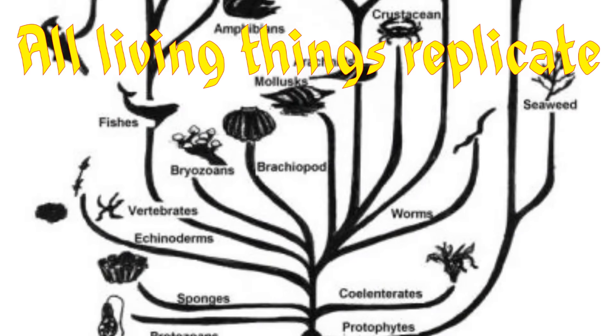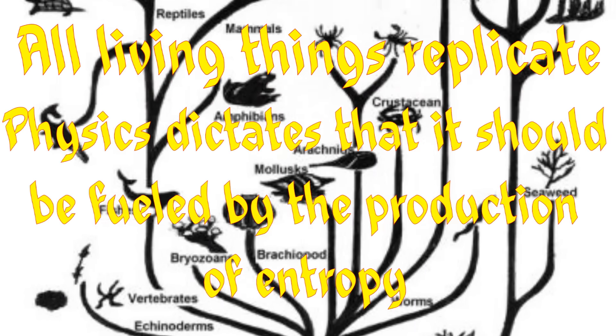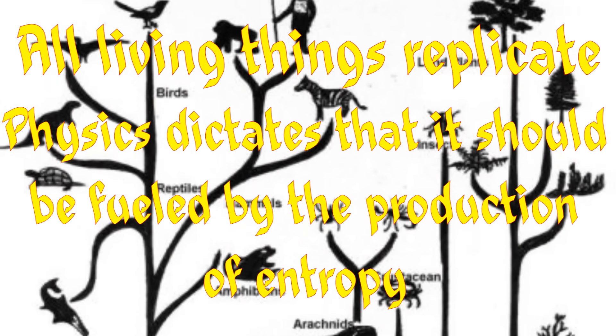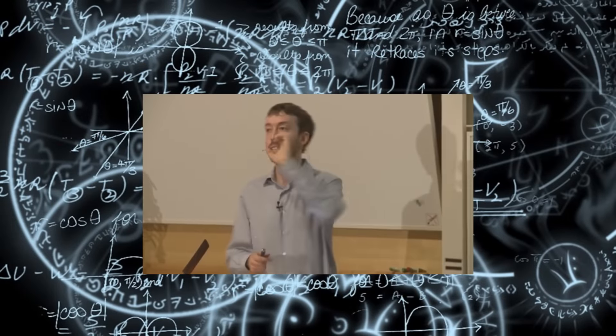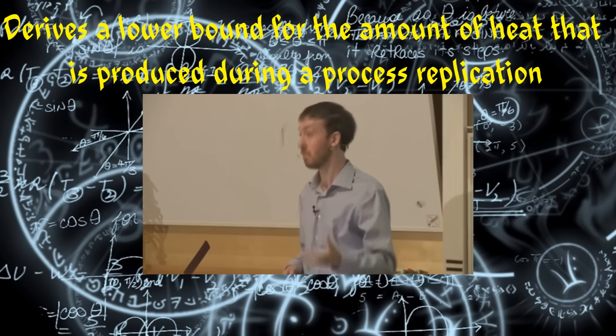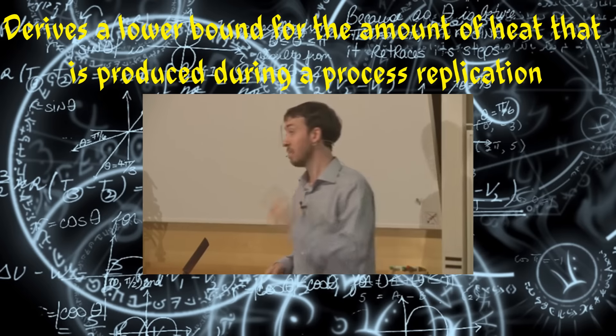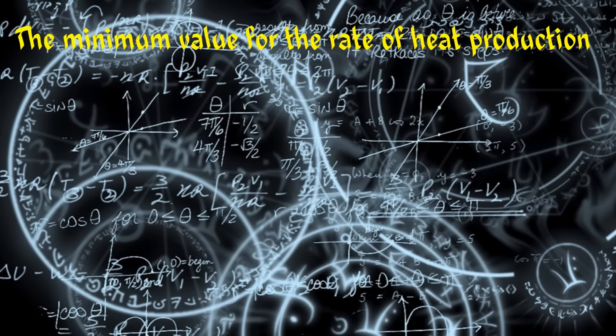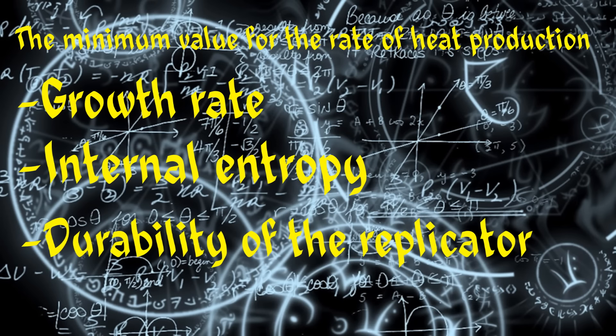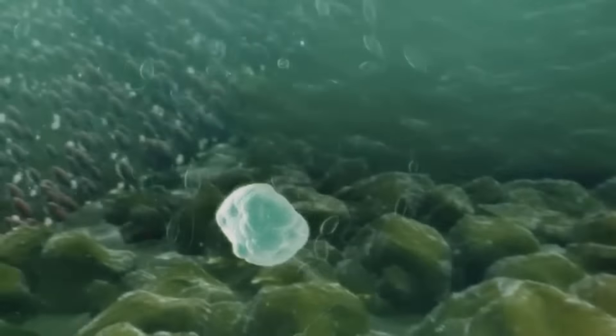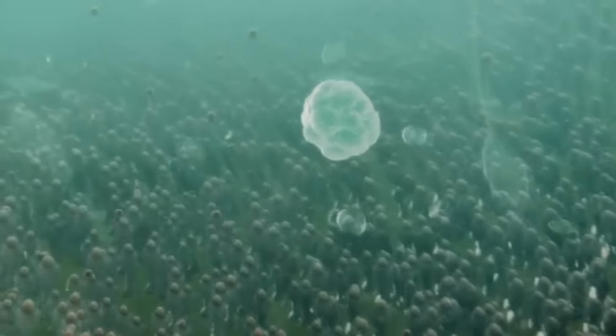Self-replication is a capacity common to every species of living thing, and simple physical intuition dictates that such a process must invariably be fueled by the production of entropy. In a recent paper, Jeremy England, a professor of physics, makes this intuition rigorous and quantitative by deriving a lower bound for the amount of heat that is produced during a process of self-replication in a system coupled to a thermal bath. We find that the minimum value for the physically allowed rate of heat production is determined by the growth rate, the internal entropy, and durability of the replicator, and we'll also discuss the implications of this finding for bacterial cell division as well as for the prebiotic emergence of self-replicating nucleic acids.